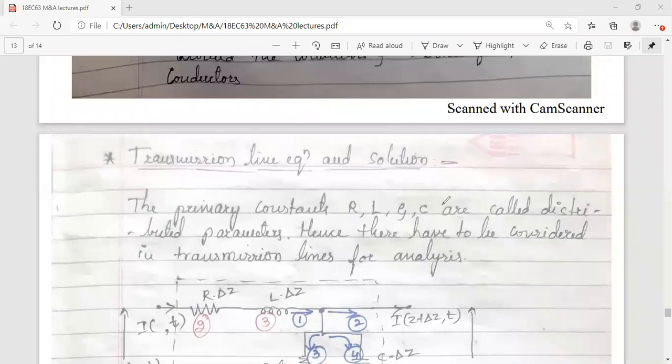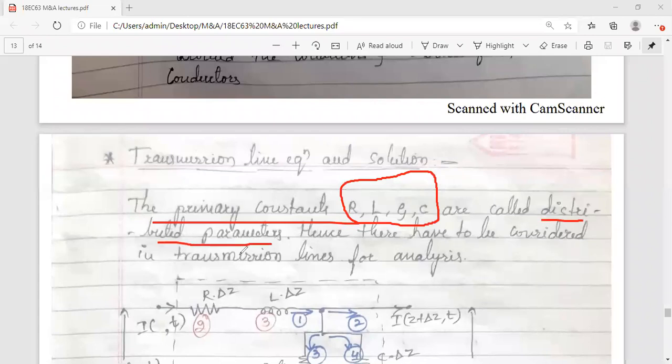Now the primary constants I told you - resistance, inductance, conductance, and capacitance - these are called the primary constants. In transmission line analysis, they are called distributed parameters because they are distributed all along the transmission line, so they have to be considered in transmission line analysis.